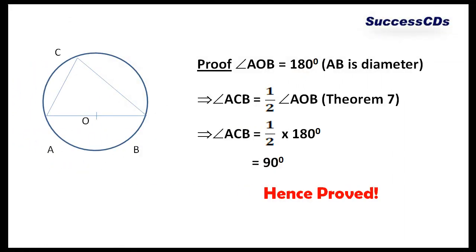Now let's have a look at the proof. Angle AOB is subtended at arc AB which is equal to 180 degrees since AB is a diameter.